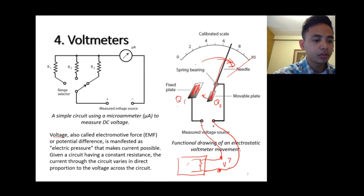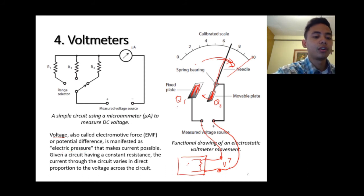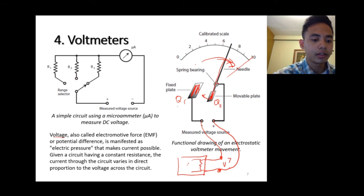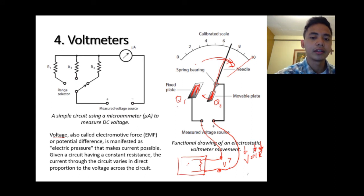You can also think of voltage as electric pressure — analogous to water pressure. Given a circuit with a constant resistance, current varies in direct proportion to voltage, per Ohm's law: V = IR. With a fixed resistor, changing the voltage also changes the current — they are directly proportional.